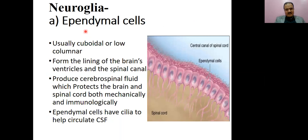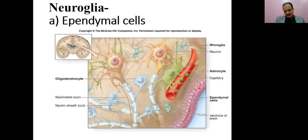Ependymal cells are usually cuboidal or low columnar and form the lining of the brain's ventricles and the spinal canal. They produce cerebrospinal fluid which protects the brain and spinal cord both mechanically and immunologically. Ependymal cells have cilia to help circulate CSF. You can see these cells are columnar or cuboidal with cilia towards the central canal. Similarly, ependymal cells line the ventricles of the brain.